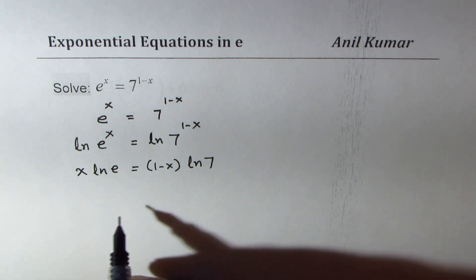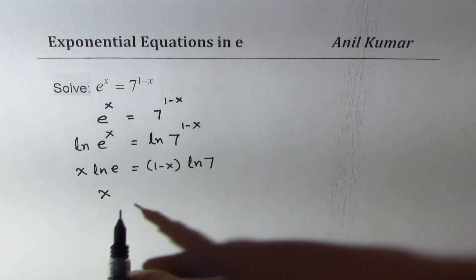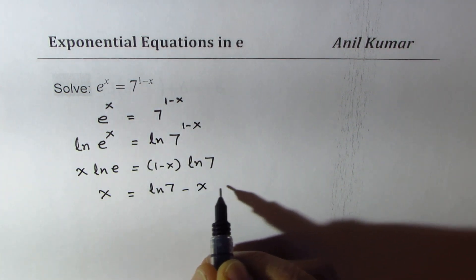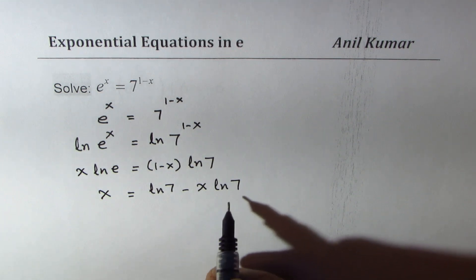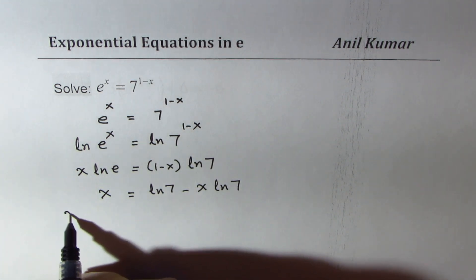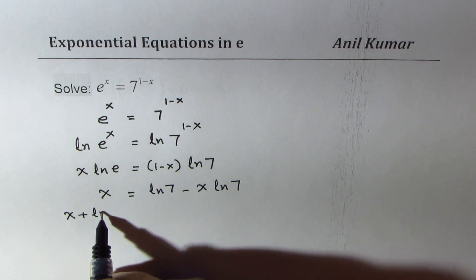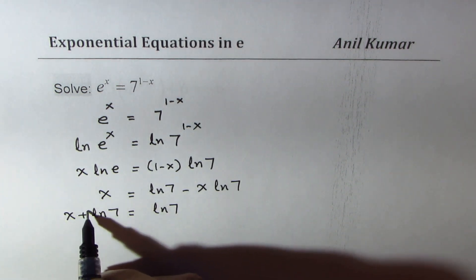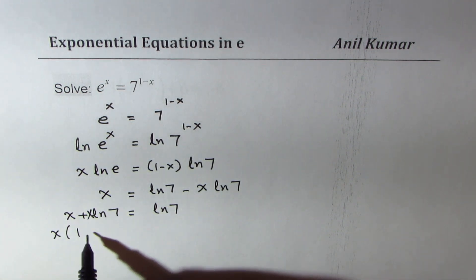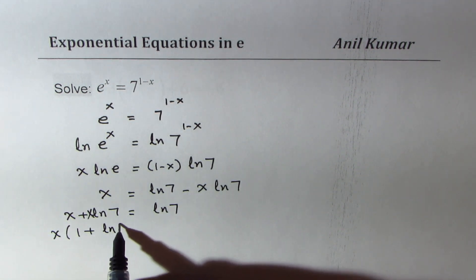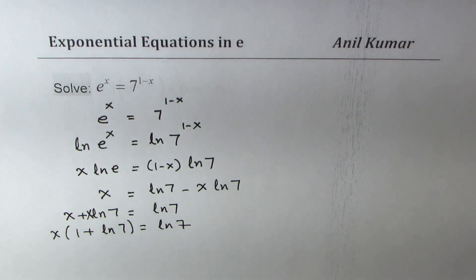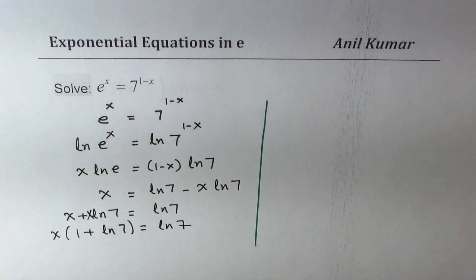Now ln(e) is 1, so we get x on the left side equals ln(7) minus x·ln(7). Bringing the x·ln(7) term to the left side, we get x plus x·ln(7) equals ln(7). So x is a common factor, giving us x times (1 plus ln(7)) equals ln(7). Dividing both sides by the coefficient of x: